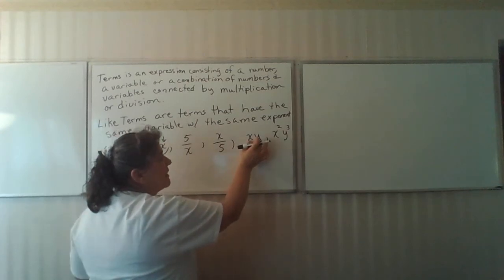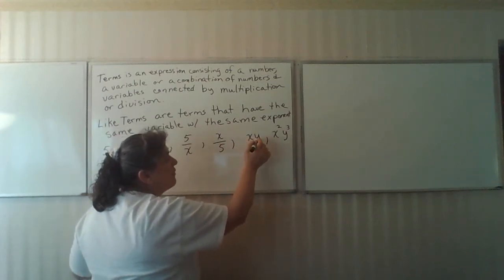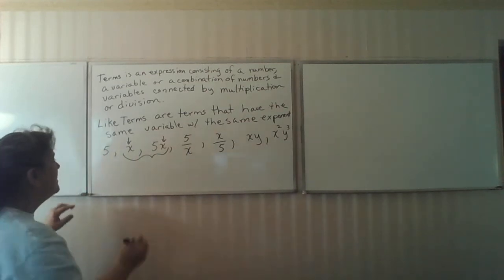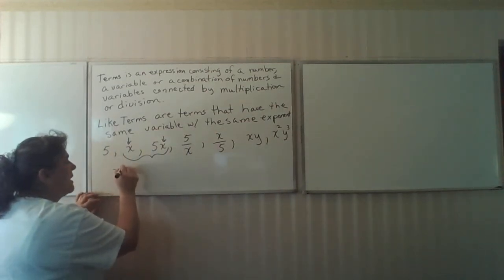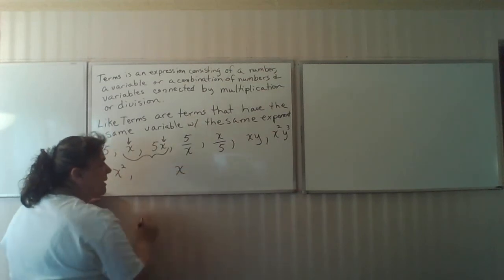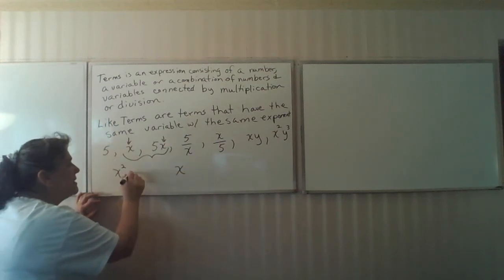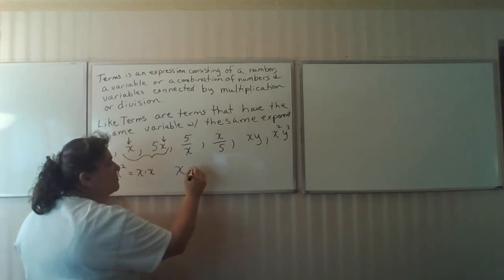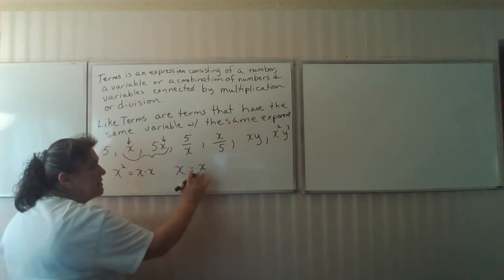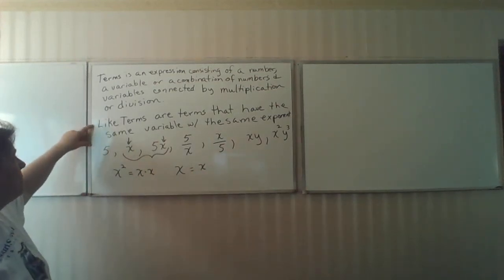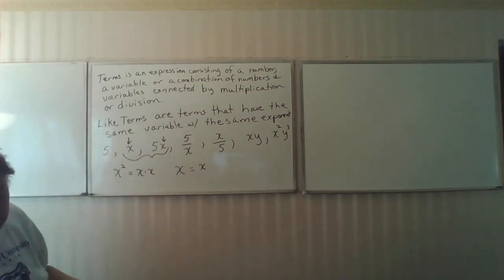This one is x times y, but that's two variables, this is one variable. And the reason why x squared and x are not the same is this is x times x, and this one is just simply x. So it's important to understand what makes them like and what makes them different.